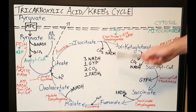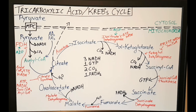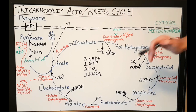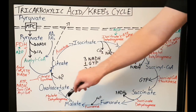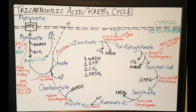This is what you get from the Krebs cycle after one round. It's important to note that no products or substrates are actually consumed in this process. You started with oxaloacetate at the beginning and added an acetyl-CoA, and you end again with an oxaloacetate.